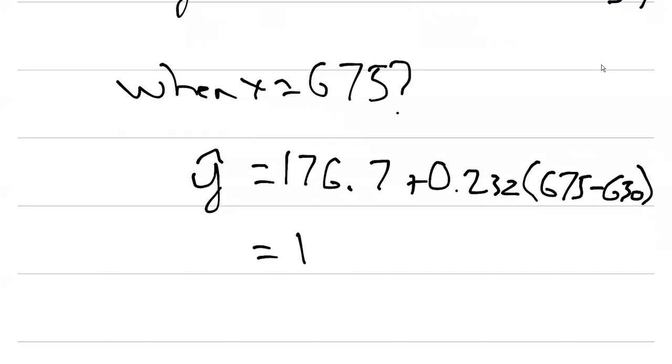And so when we get that, we would expect 182.5 bushels per acre if we put in $675 per acre to produce that yield.